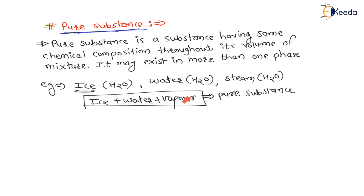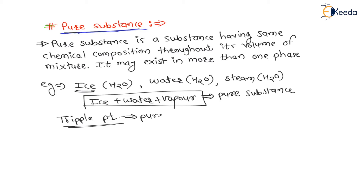At the triple point of water, the substance exists in solid, liquid, and gaseous phases simultaneously — that is, ice plus water plus vapor. Since the chemical composition remains H2O throughout, the triple point of water is still considered a pure substance and falls under the pure substance condition.